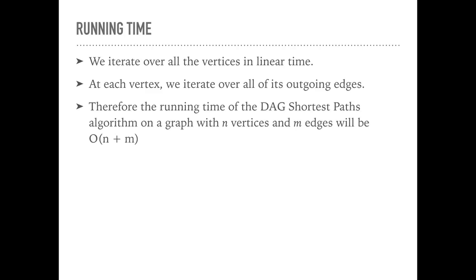The running time is pretty easy. We're going to iterate over all of the vertices in linear time. At each vertex we'll iterate over all of its outgoing edges. Therefore, the running time of DAG shortest path on a graph with n vertices and m edges will be order n plus m.